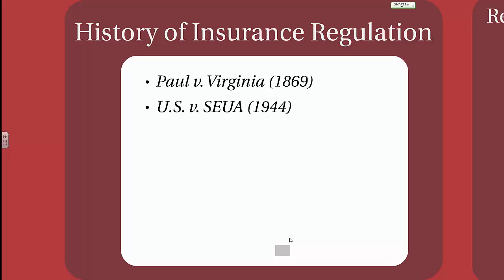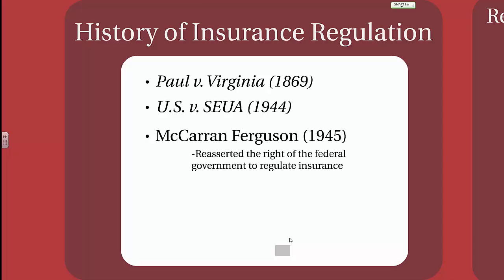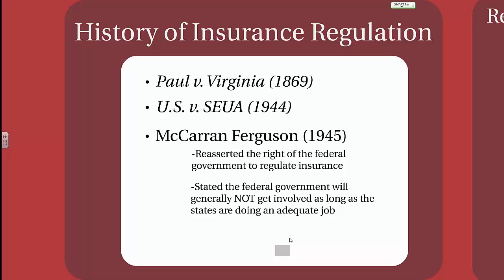But this created a lot of problems for the insurance industry, who quickly came to the table to argue that they should be state regulated, as they had been for the last 75 years or more. A year after U.S. v. SEUA came a congressional act called McCarran Ferguson, also known as Public Law 15. It only took one year for Congress to come forth with an act which reasserted the right of the federal government to regulate insurance, but stated that the federal government will generally not get involved in the insurance business as long as the states are doing an adequate job of regulating insurance, despite the fact that it is considered interstate commerce.